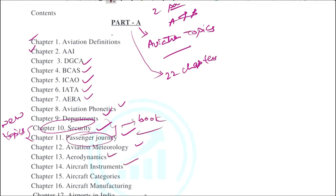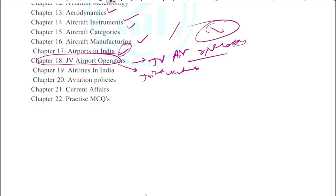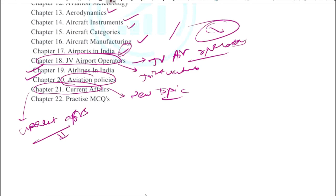Next, aerodynamics, aircraft instruments, aircraft categories, aircraft manufacturing, then airports in India, and JV airport operations. This is also a new topic on joint venture airport operators. Next, airlines in India, then recent policies in aviation. This is also a new topic. We've added a new chapter on current affairs since many people requested it.